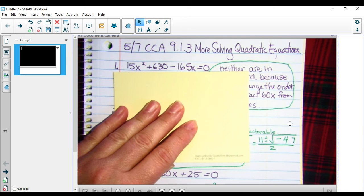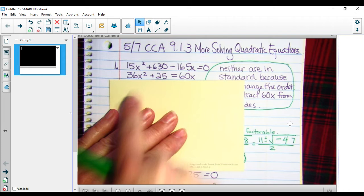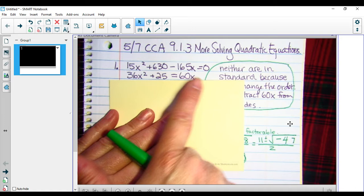The second one, we want the x squared, the x term, and the constant all on the same side, so we need to subtract 60x from both sides.